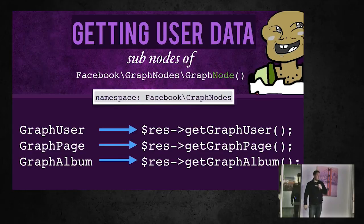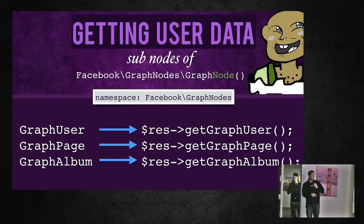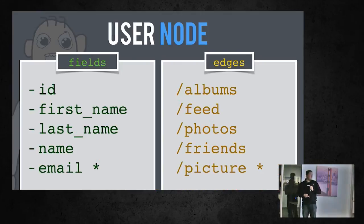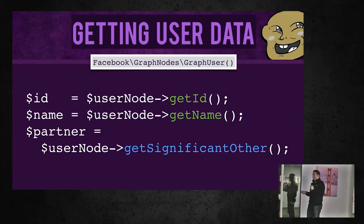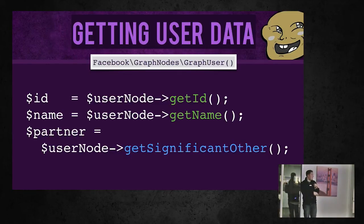Graph nodes extend from a collection written by Taylor Otwell, who also wrote Laravel. So you can do iterations over it and have array access — it's really nice to work with Graph responses. There are also sub-nodes that represent specific objects on Graph, like GraphUser, GraphPage, and GraphAlbum. With the user node from the SDK, you access fields with typed methods. Interestingly, getSignificantOther() returns not just a string or ID but a full user node, and it'll automatically get cast as a GraphUser node — which is quite nice.